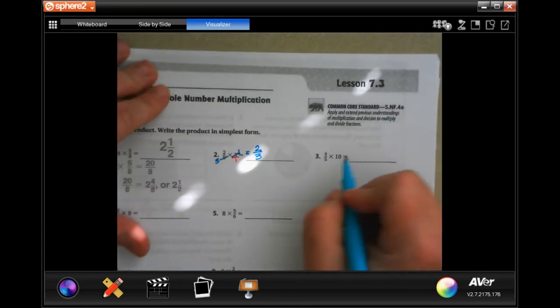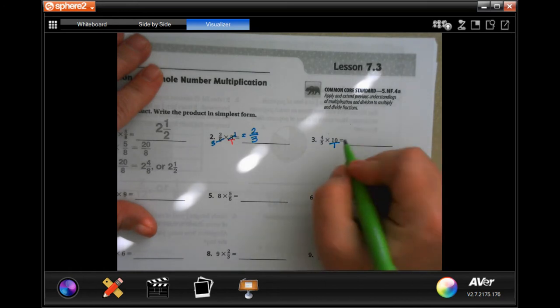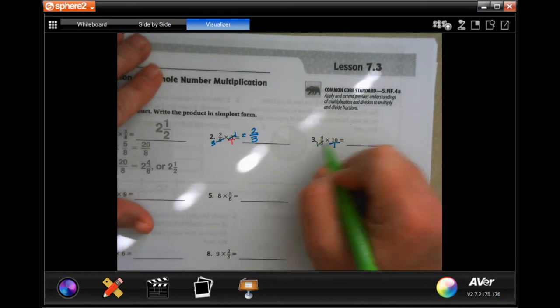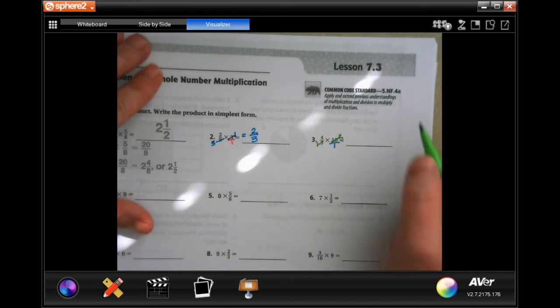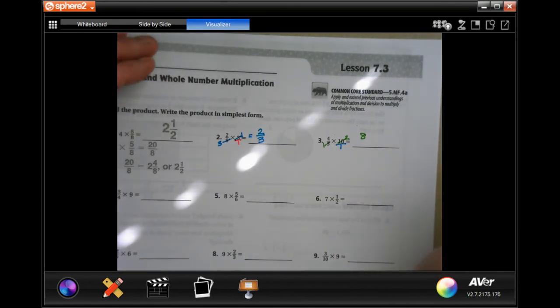Again, put the 10 over a 1. Go in and reduce. So 5 goes into 5 once, 5 goes into 10 twice. 2 times 4 is 8, and it would be over 1, so I'm not going to put that 1, so it's just going to be 8.